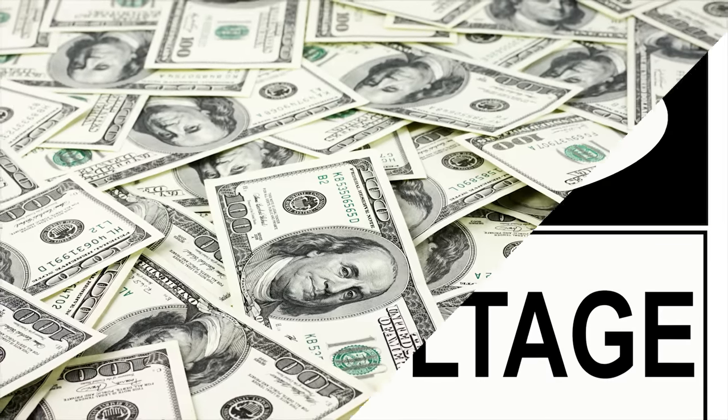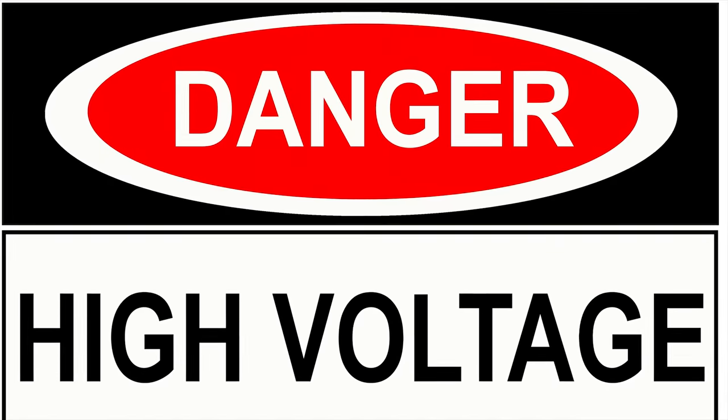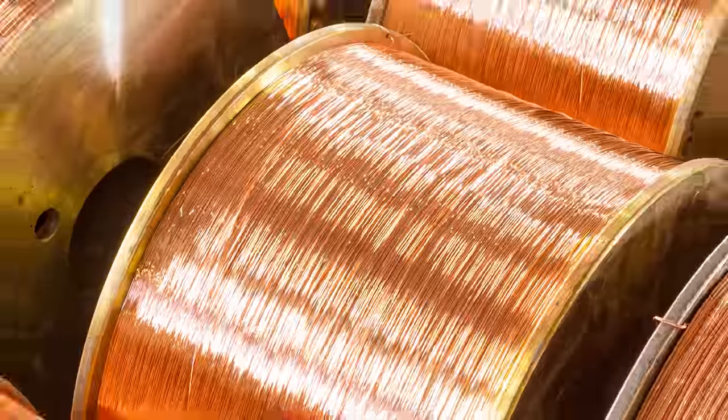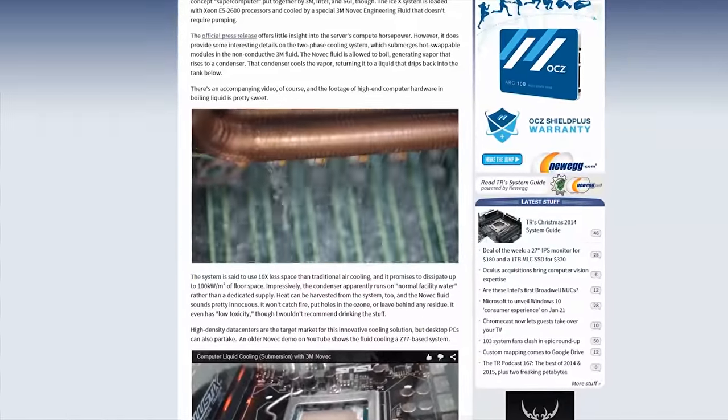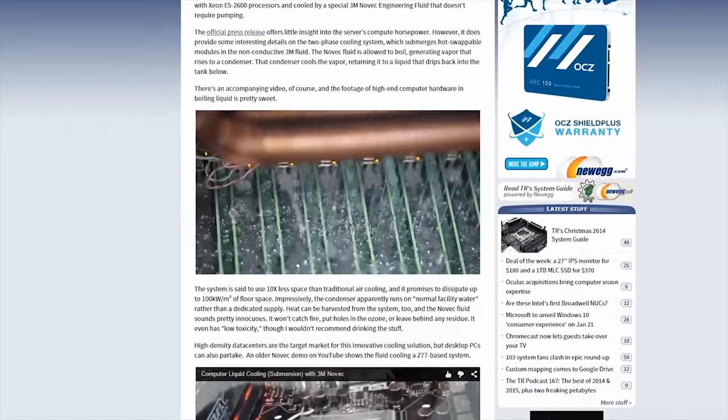Titan uses 480-volt electrical power to allow thinner gauge cables, saving about a million dollars in copper during construction. The IBM Aquasar system actually recycles the water-cooling fluid that's used to cool the processors to heat buildings, and Intel and 3M showed off an inert fluid-submersion concept earlier this year that looks bananas.